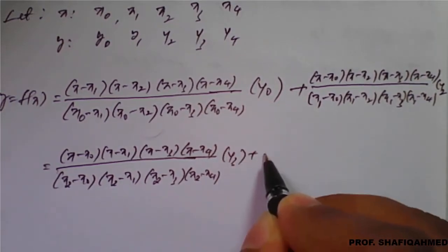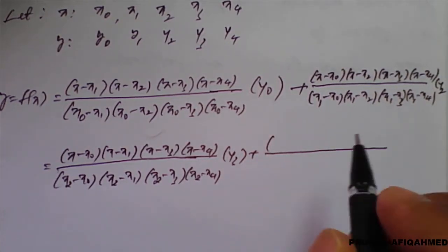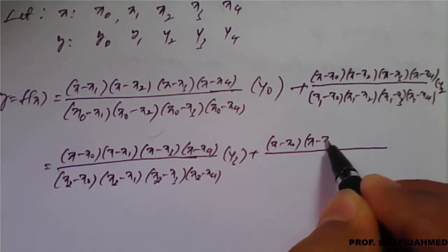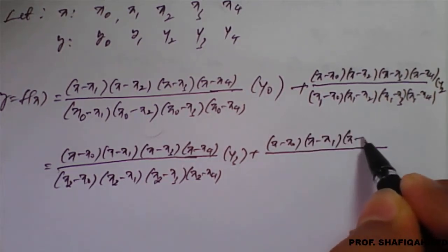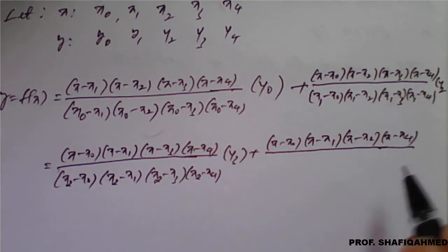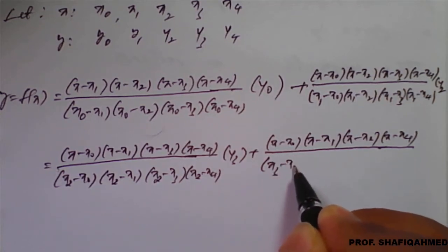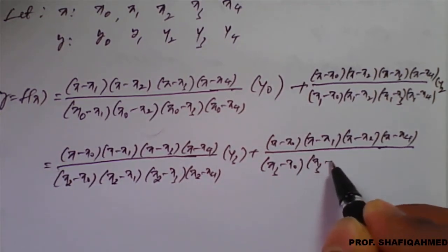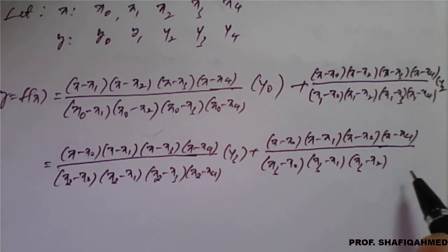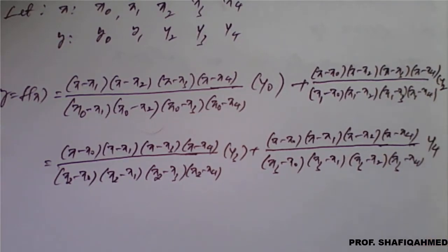Plus the next term — we have to leave x3: x minus x0, x minus x1, x minus x2, x minus x4 divided by x3 minus x0, x3 minus x1, x3 minus x2, x3 minus x4, into y3. Plus the next term...